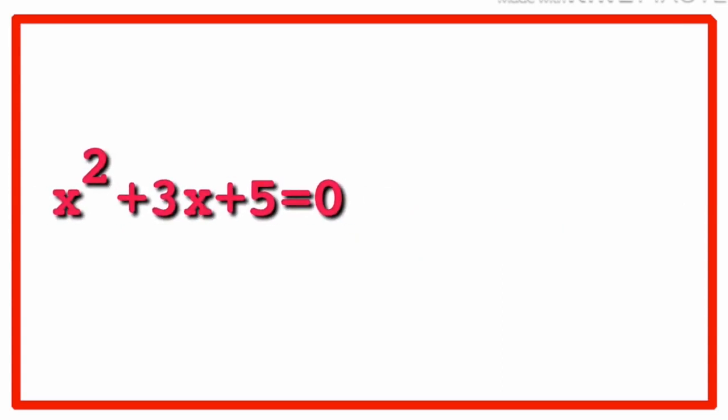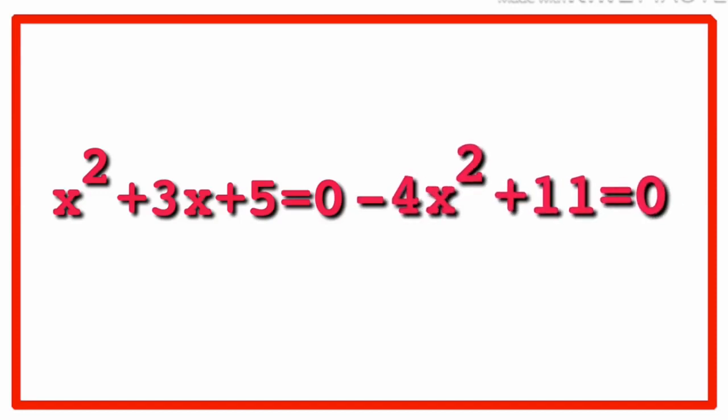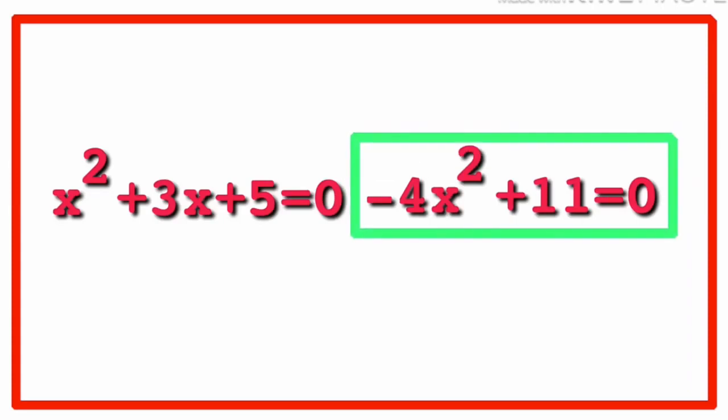x squared plus 3x plus 5 equal to zero is also a quadratic equation. Negative 4x squared plus 11 equal to zero. Yes, you might not see the x with the power of 1 on this equation but still, it is a quadratic equation. That's because of the degree of the polynomial on the left is 2.